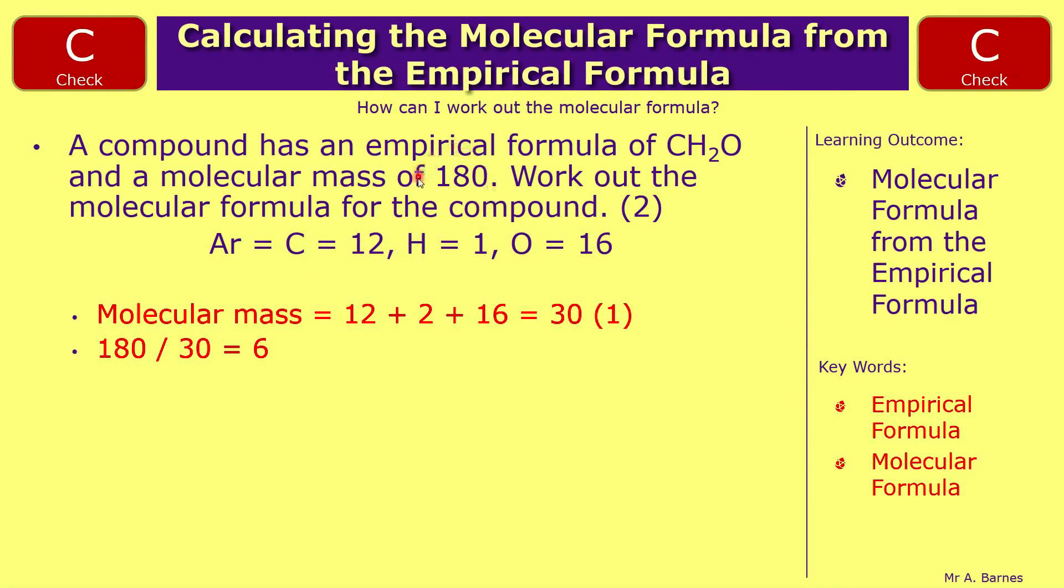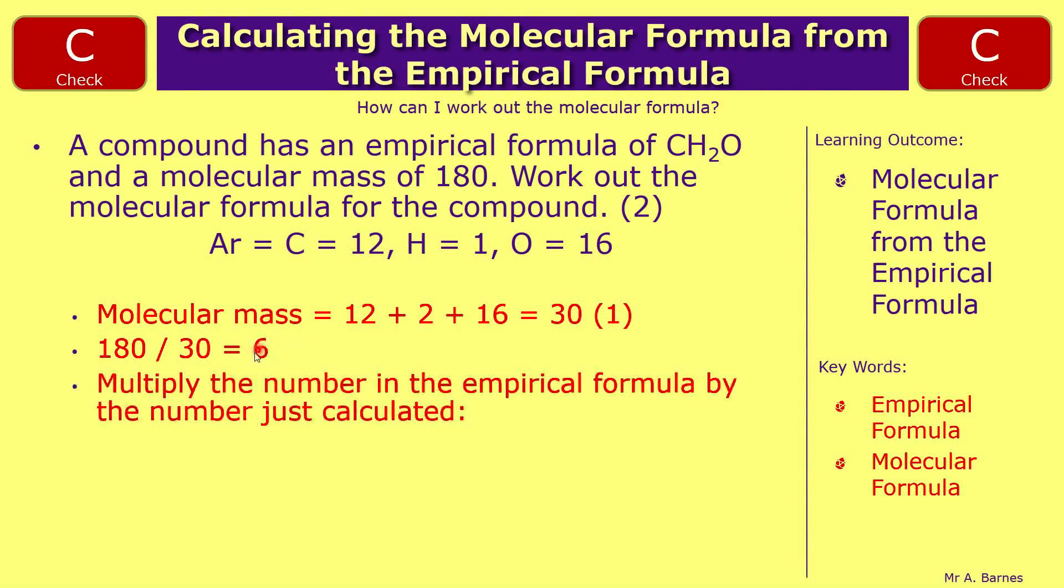The second step is to divide the molecular mass that you were given by what you've just worked out. 180 divided by 30 is 6. So you now know that you have 6 times that molecule. So you just need to multiply whatever number of each of those you had by that 6.